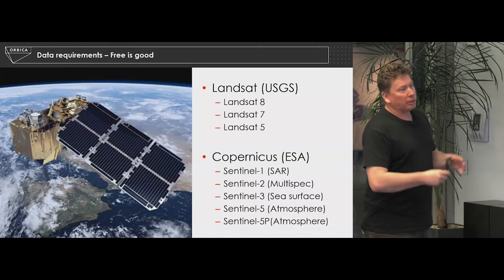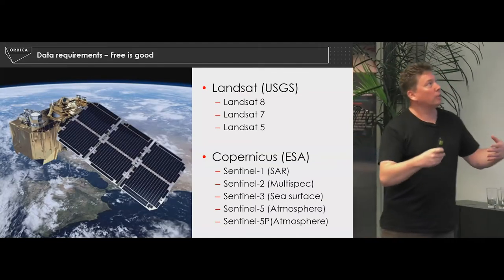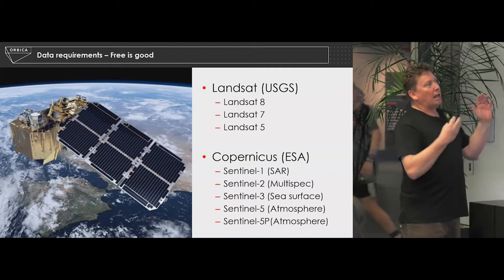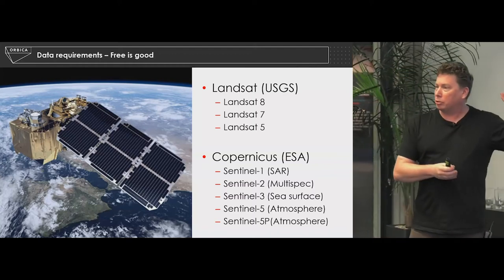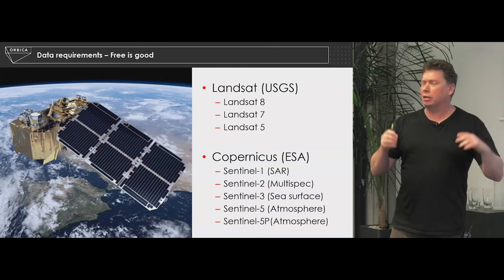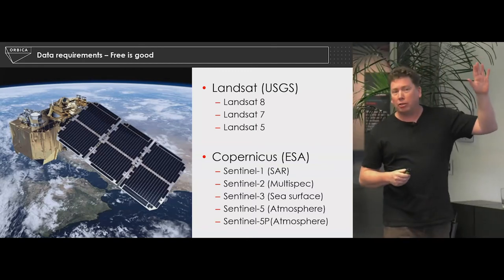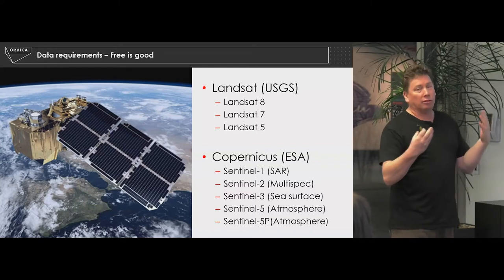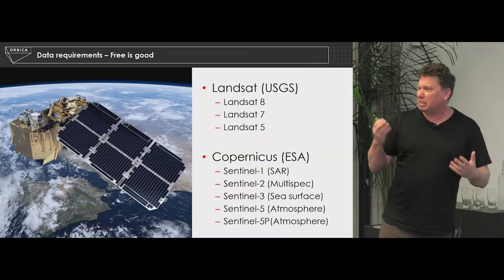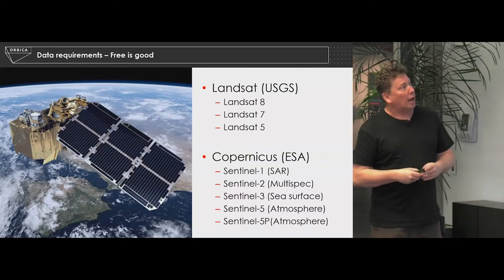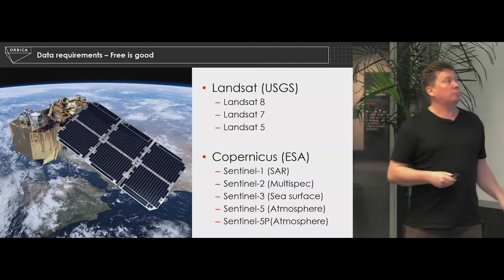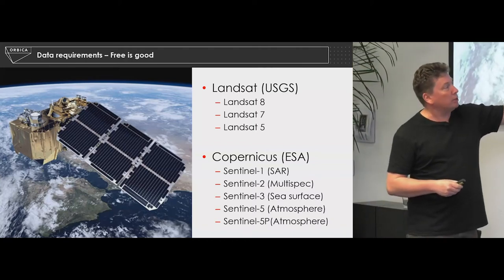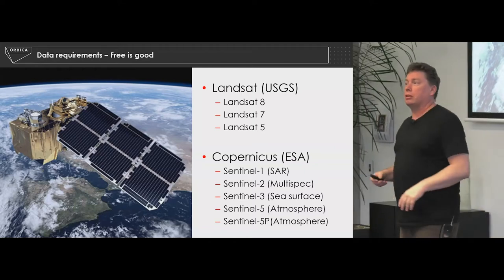When we think about free data, Landsat and the Copernicus program are the gold standards. Landsat is roughly 30 meters per pixel — it's been collecting data since about 1984-85 with Landsat 5. Copernicus, especially Sentinel-2, which we use for our RGB imagery, has been running since 2016.